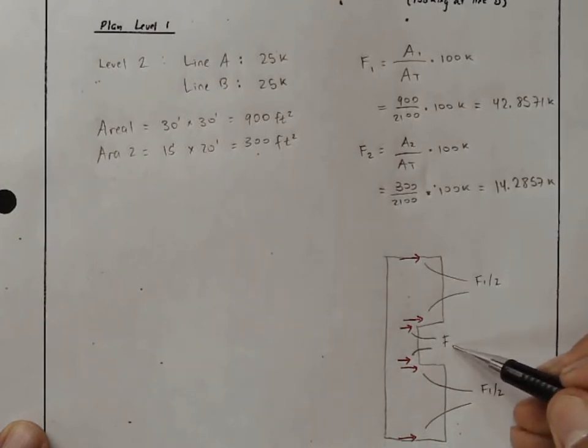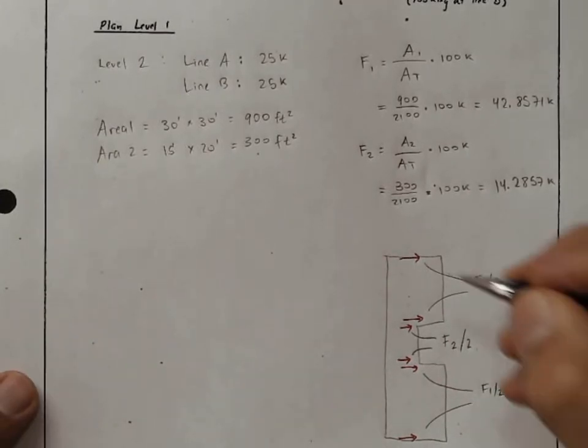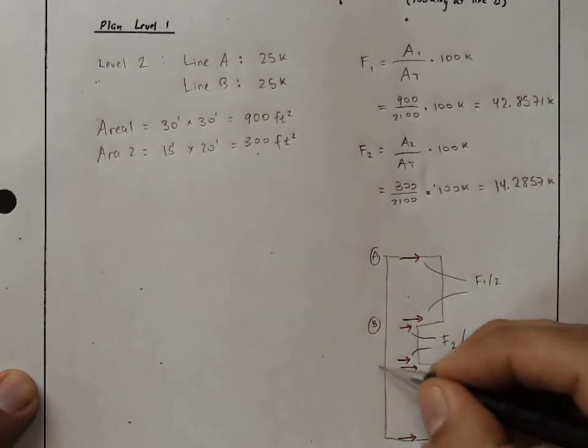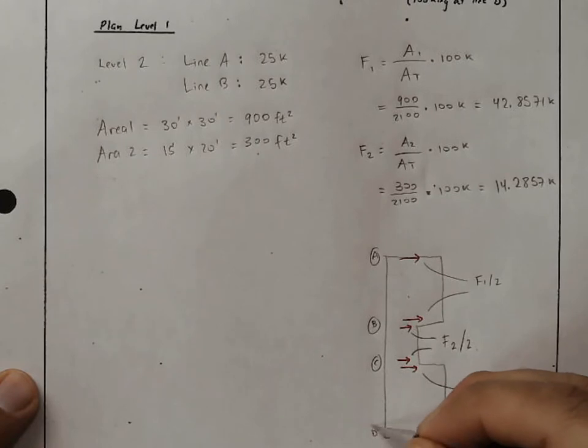This here is F2 over 2, and we'll remind ourselves that this is line A, B, C, and D.